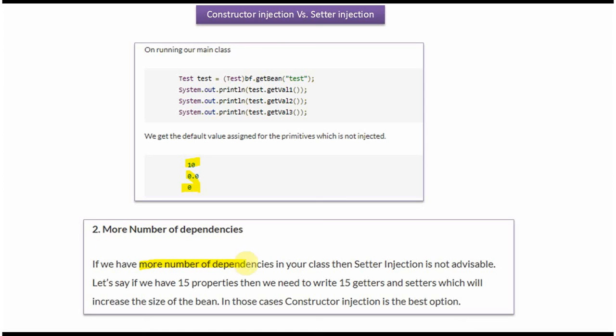If we have more number of dependencies in our class then setter injection is not advisable. Let's say if we have 15 properties then we need to write 15 getters and setters which will increase the size of the bean. In those cases, constructor injection is the best option.